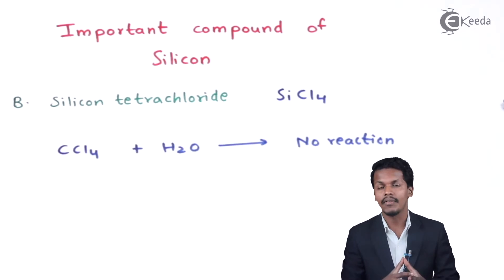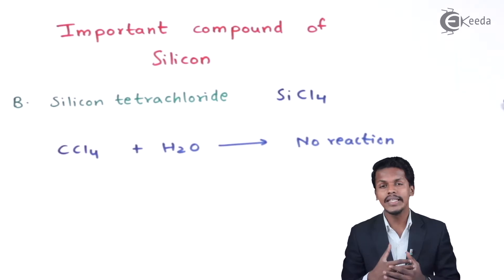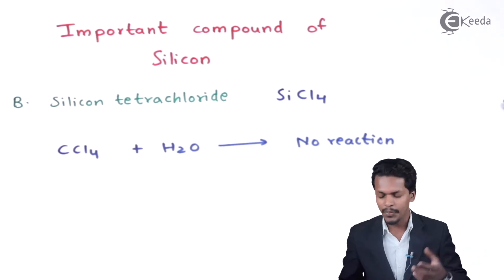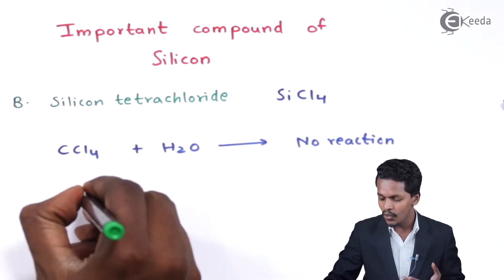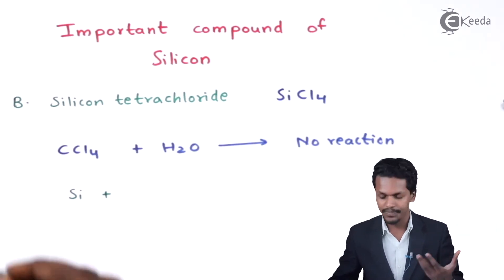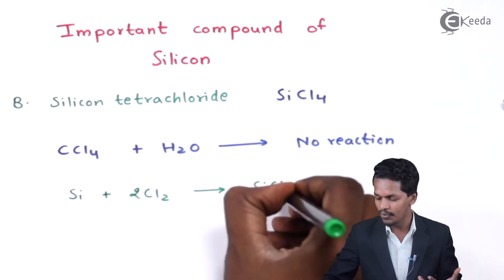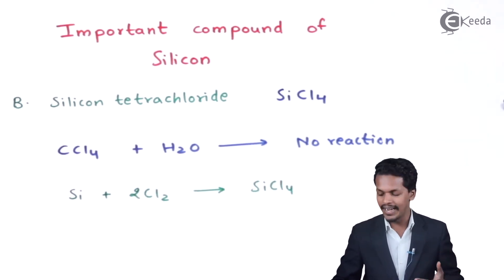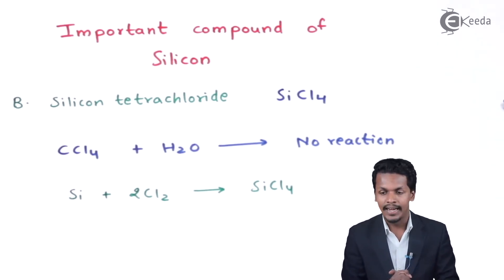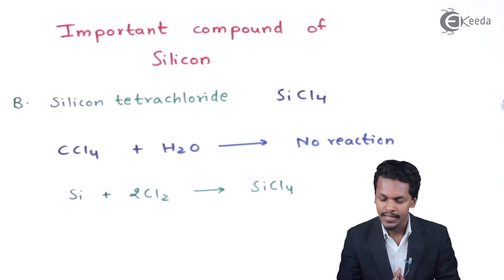Before discussing the hydrolysis product, let me explain how we prepare SiCl₄. It is a very simple process: silicon undergoes halogenation, and when it reacts with the halogen — in this case 2 moles of Cl₂ — the product we obtain is SiCl₄. Silicon can easily undergo reaction with halogens, and that is how silicon tetrachloride is obtained.